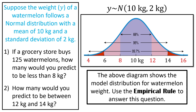I'm back. Here's the scenario. We're supposing that the weight of a watermelon follows a normal distribution with a mean of 10 kilograms and a standard deviation of 2. What I'm stating here in the blue is a model — a model for the population of watermelons.